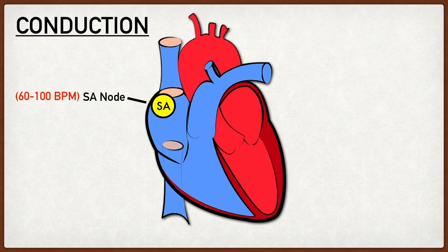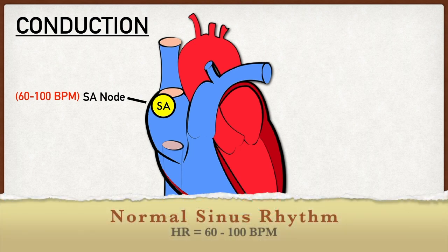If you ignore the external influences of the sympathetic and parasympathetic nervous system and focus only on the automaticity of the heart, the SA node will lead to the heart beating approximately 60 to 100 times per minute. This is known as the normal sinus rhythm.